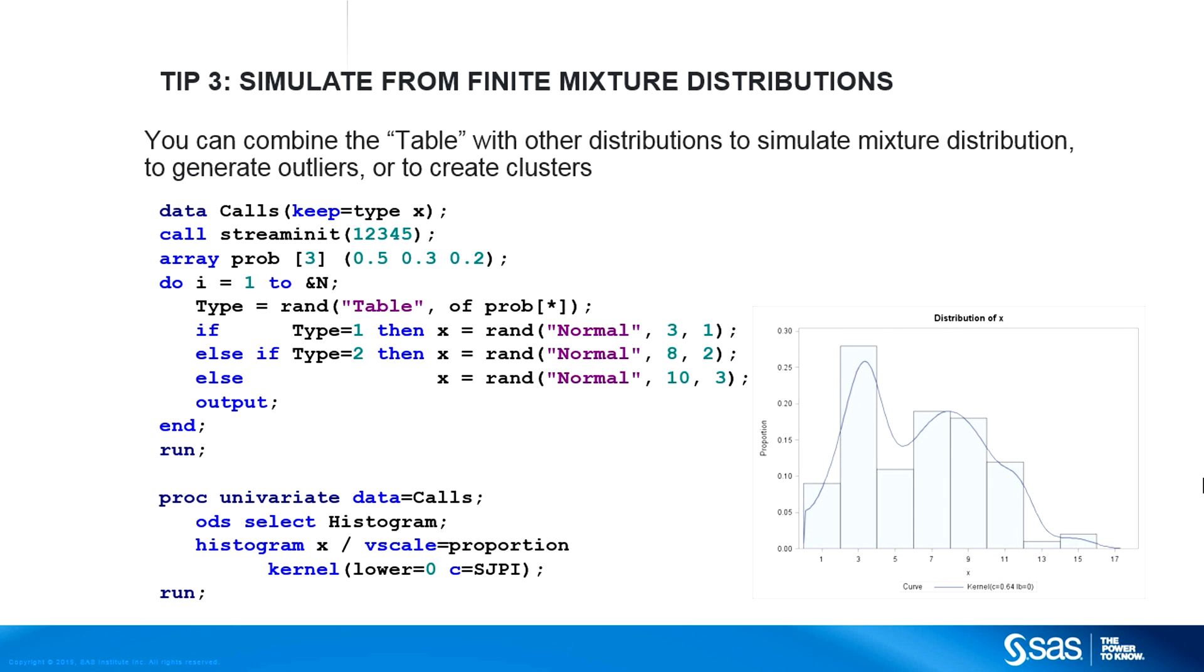Tip number three: learn how to simulate from finite mixture distributions. Suppose that you model a distribution as a finite mixture of three normal distributions. You can use the table distribution to generate a random number 1 through 3. Based on that value, you can generate x from a normal distribution with a particular mean and variance. The resulting sample is a draw from a finite mixture with specified mixing probabilities. A histogram of the sample shows three peaks that correspond to three component distributions.